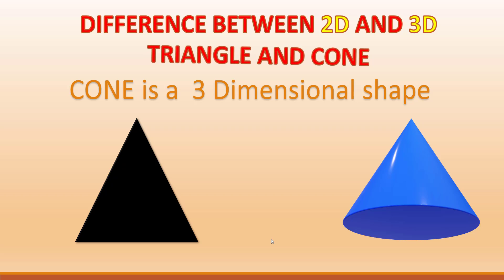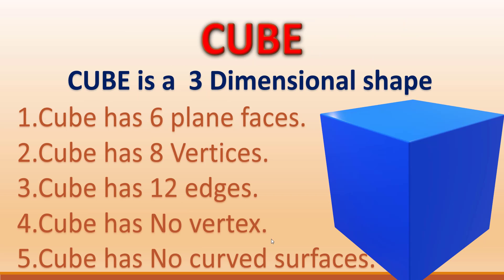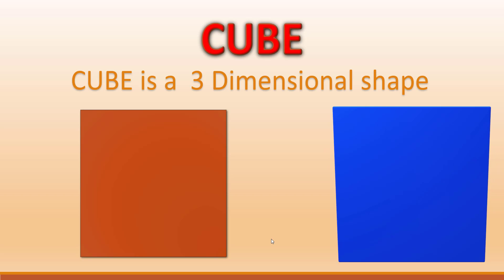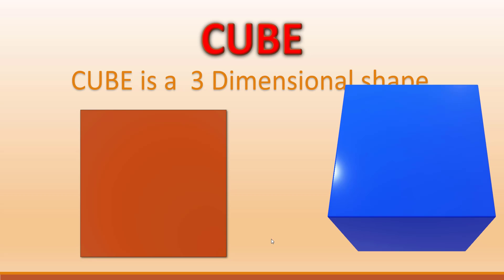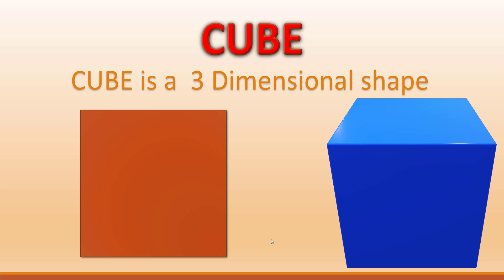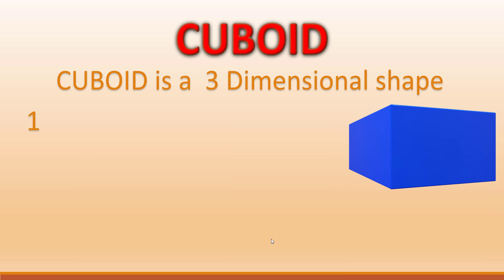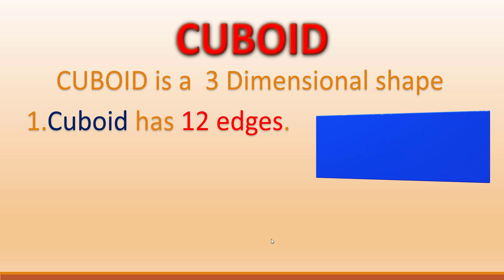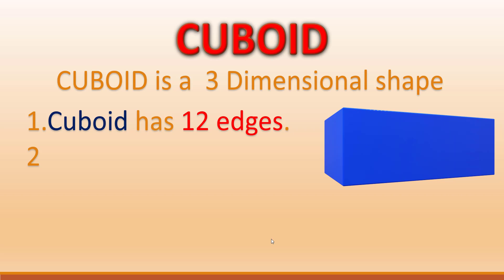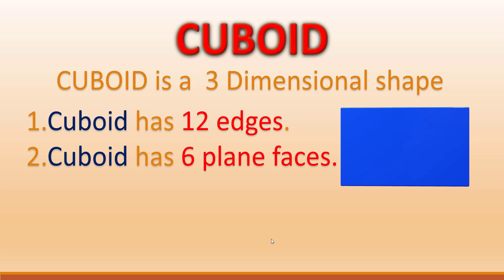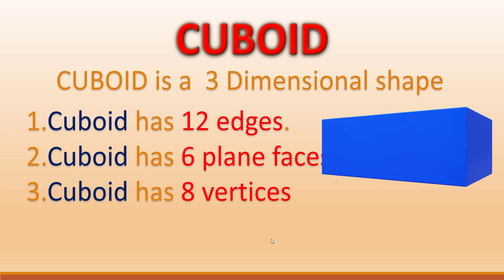Cube: cube has six plane faces, eight vertices, and 12 edges. It has no curved surfaces. The difference between cube and square: square is two-dimensional and cube is three-dimensional. Cuboid has 12 edges, six plane faces, and eight vertices.